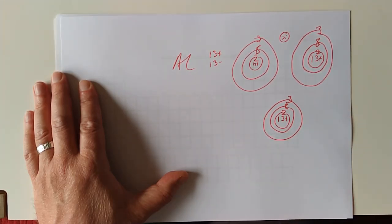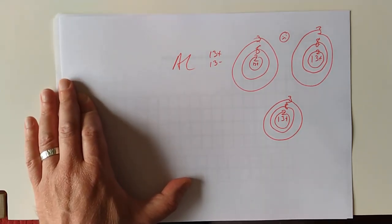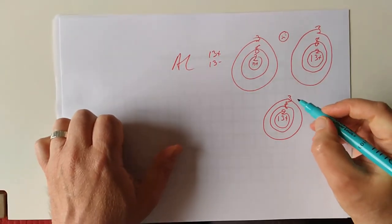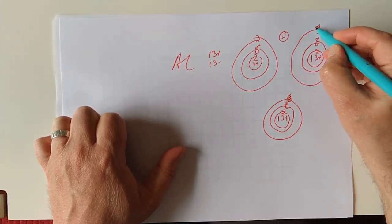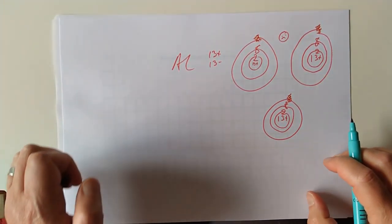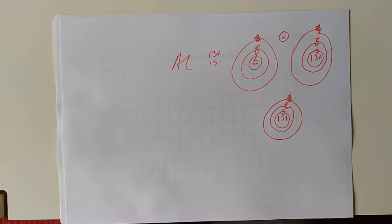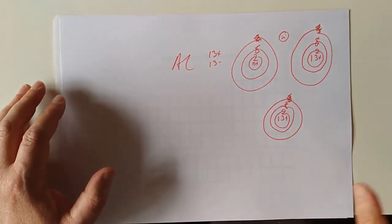This is not a compound. So what does the aluminium atom do? Fascinatingly, it decides just to throw off these three electrons anyway. Where do they go?